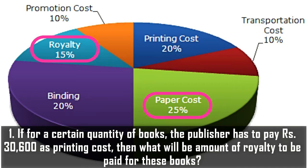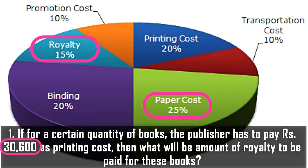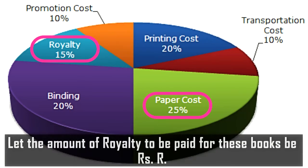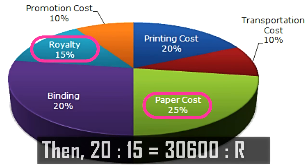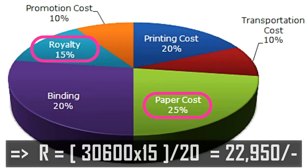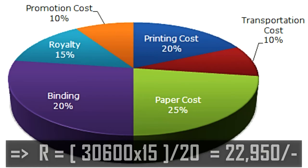From the pie chart, paper cost is 25 percent and royalty is 15 percent. Given that the amount of paper cost is 30,600, that is 25 percent of the total cost, we need to find 15 percent of the total cost. Let the royalty be R. Then 25 is to 15 equals 30,600 is to R, giving R equals 22,950 rupees.